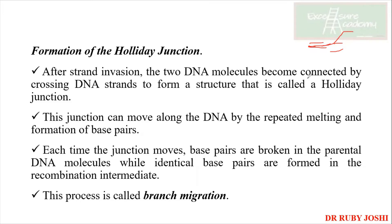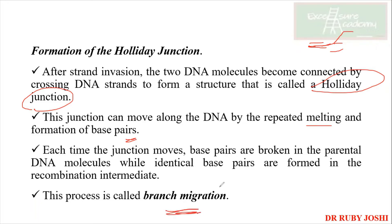After strand invasion, the two DNA molecules become connected by crossing the DNA strands to form a structure called a Holliday junction. This junction can move along the DNA by repeated melting and formation of base pairs — it's breaking hydrogen bonds and again making new hydrogen bonds, resulting in movement, which is called branch migration. Each time the junction moves, base pairs are broken in the parental molecules and are formed in the recombination intermediate.